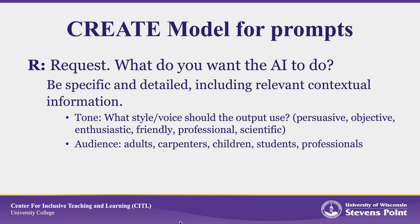Tell the AI who the audience for the output is. Do you want it to be for adults, carpenters, children, students, professionals? AI explaining things to an expert versus to a child will result in drastically different output, because the words chosen will be different and the complexity of the information provided will be different. Include all the details you want to see in the output — rather than just asking for a cost analysis in tabular format, you may ask for a breakdown of costs for different categories of building materials, or projections for what costs will be in two years assuming particular rates of inflation. The more you can detail in your prompt, the better the responses will be.